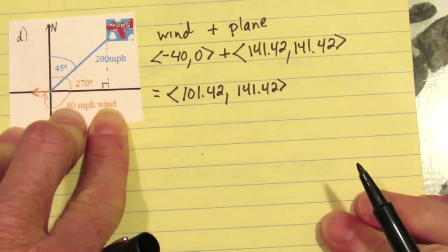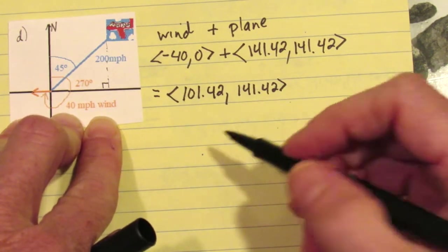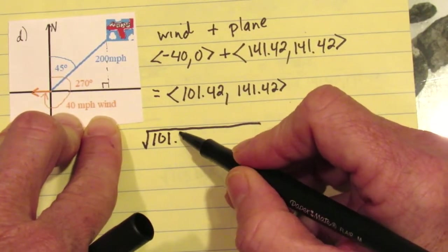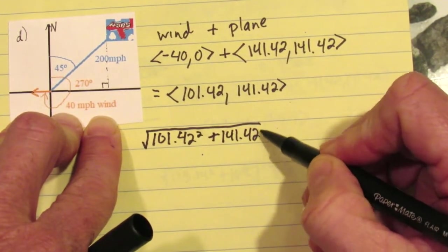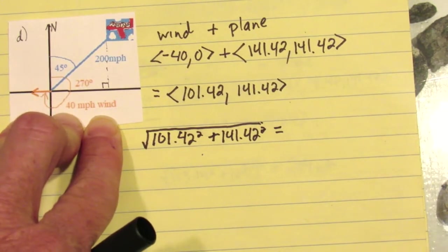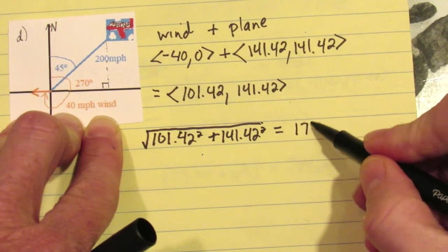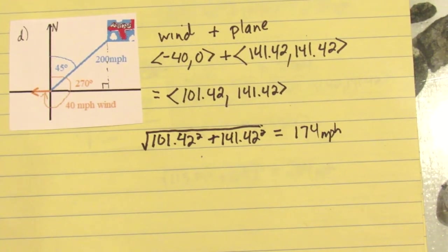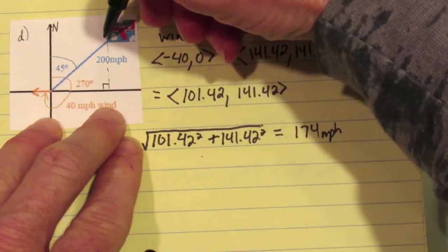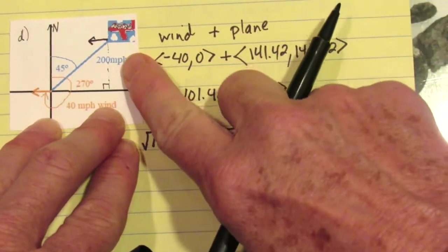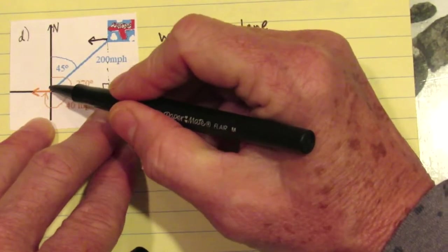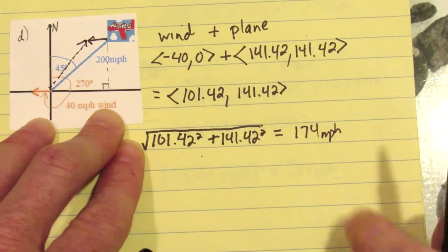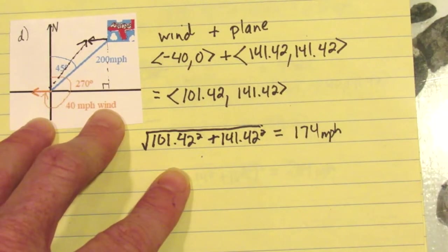The plane keeps getting pushed a little more towards the west with that kind of wind. Finding the magnitude of that combination of wind and plane — 101.42 squared plus 141.42 squared, add those and take the square root — we end up with a speed of 174 miles per hour. So the wind is blowing in an opposite enough direction that it's actually slowed the plane down. Picture stacking the wind vector at the end of the velocity vector — the resultant is a shorter vector, and the plane has also been pushed a little to the side.